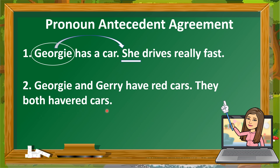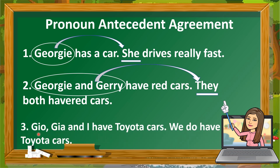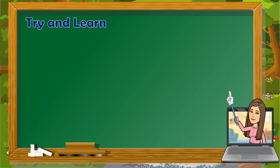Example two: 'Georgie and Jerry have red cars. They both have red cars.' The nouns are Georgie and Jerry, so we replace them with 'they.' Example three: 'Georgie and Jerry and you have Toyota cars.' Because you yourself are included, we replace those names with 'we.' These examples all show correct pronoun-antecedent agreement. Remember: the pronoun must agree with its antecedent.